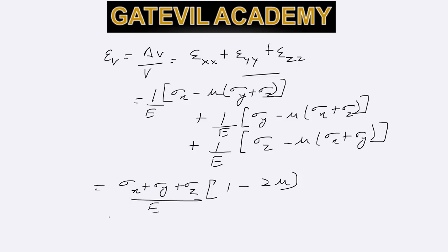So in the case of a bar, sigma x is represented as sigma, and then in the case of a bar, sigma y and sigma z will be 0. It will be equal to sigma by e 1 minus 2 mu. Apart from this, if in a 3D object...